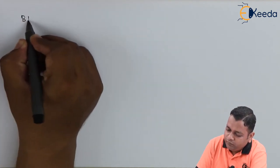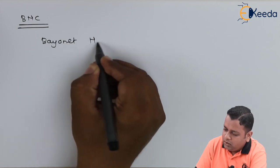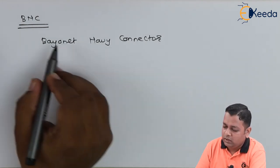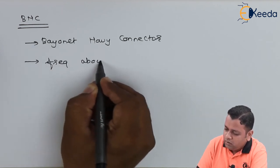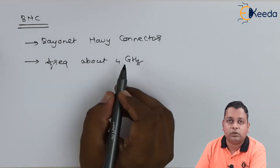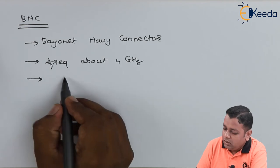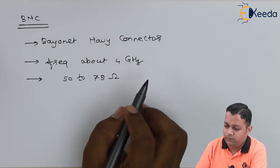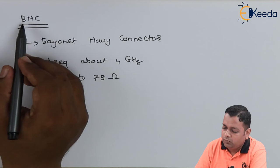After these two connectors, we have the third one abbreviated as BNC, which stands for Bayonet Navy Connector. The BNC connector works with frequencies of about 4 gigahertz, so comparatively it operates at lower frequency values. The characteristic impedance is variable in the range of 50 to 75 ohms, and frequencies under 1 gigahertz are also made operative with the help of the BNC connector.